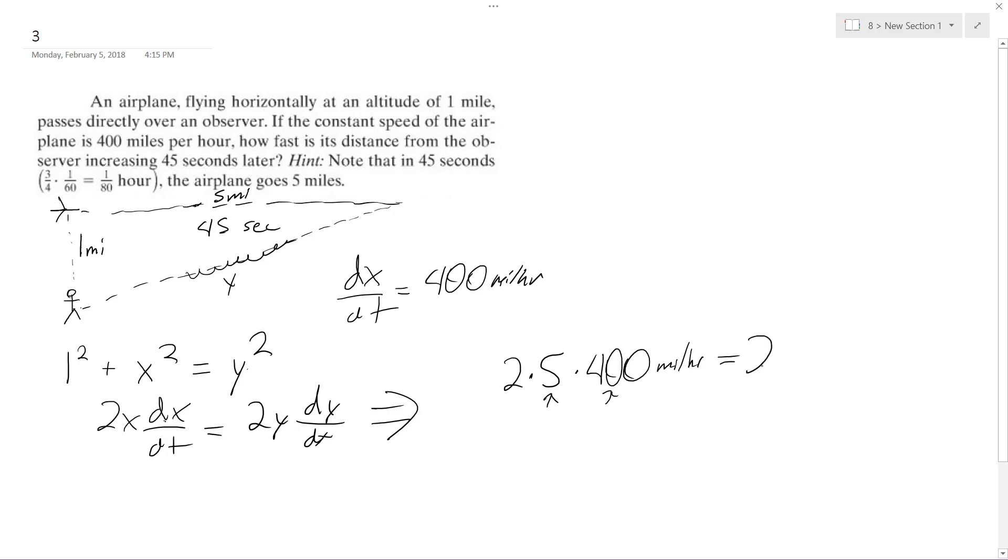All right, that is equal to 2, and then y. y is going to be equal to, I forgot to do that, so Pythagorean theorem, we had our one squared for our vertical up towards the plane over the observer, plus the five miles we travel to five squared, so square root of 26.